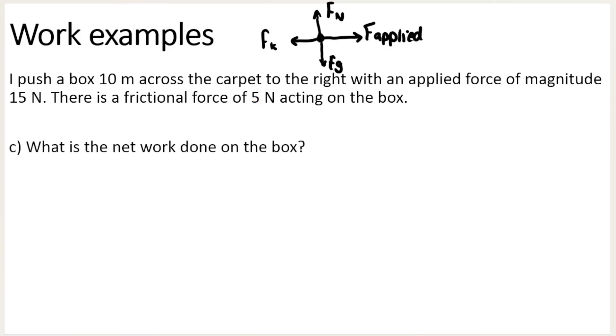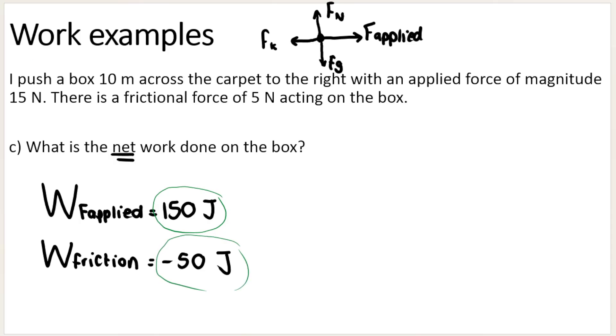Then part C is asking, what is the net work done on the box? Net work is like the resultant work, the overall work. So remember, we already said the work done by force applied is 150 joules and work done by friction is negative 50 joules. So think of it like this: we are adding 150 joules of energy to the box and removing 50 joules of energy from the box. So overall, my net work will be 150 minus 50, which is 100 joules.